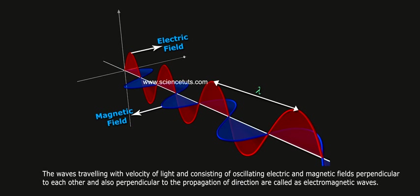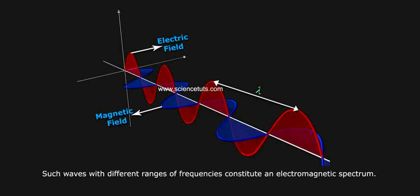The waves travelling with velocity of light and consisting of oscillating electric and magnetic fields perpendicular to each other and also perpendicular to the propagation of direction are called as electromagnetic waves. Such waves with different ranges of frequencies constitute an electromagnetic spectrum.